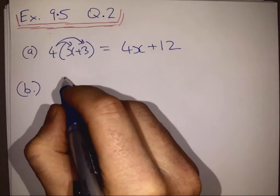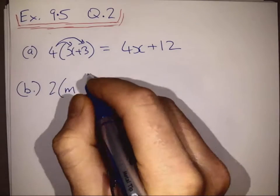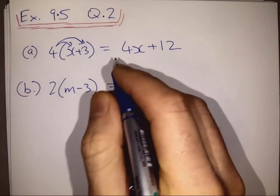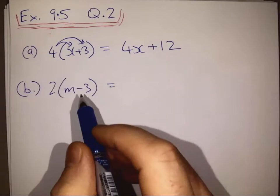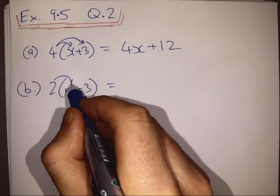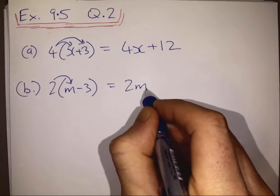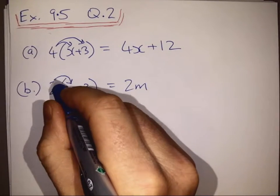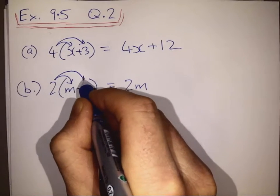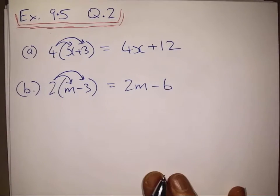Part B: 2 times m minus 3. We multiply this item by this item and we get 2 times m, then multiply it by the second item and it gives us minus 6.